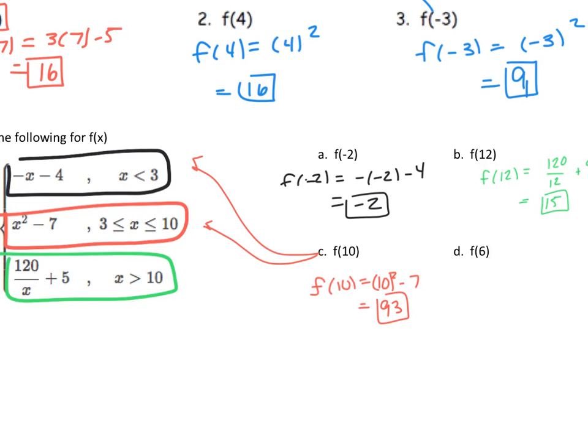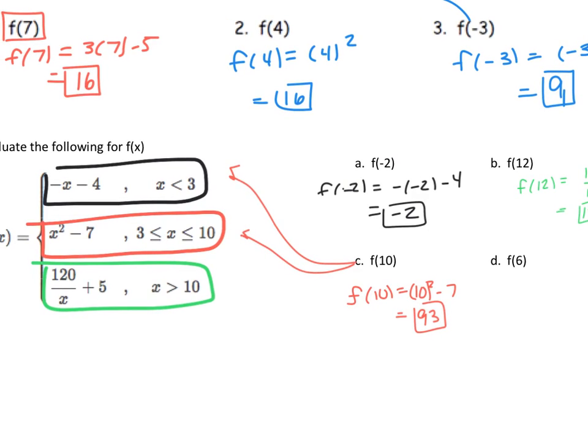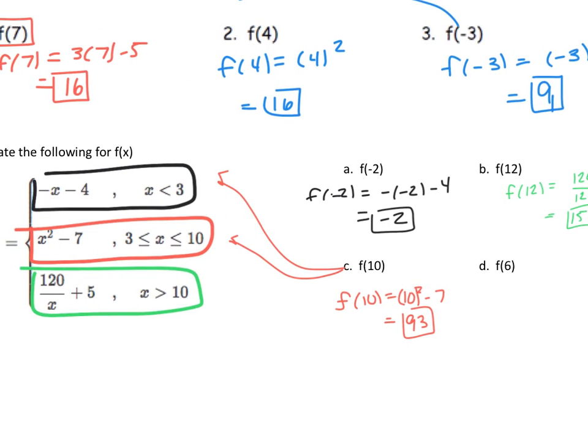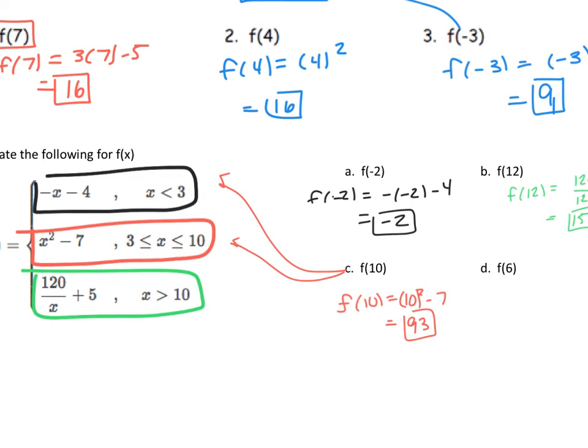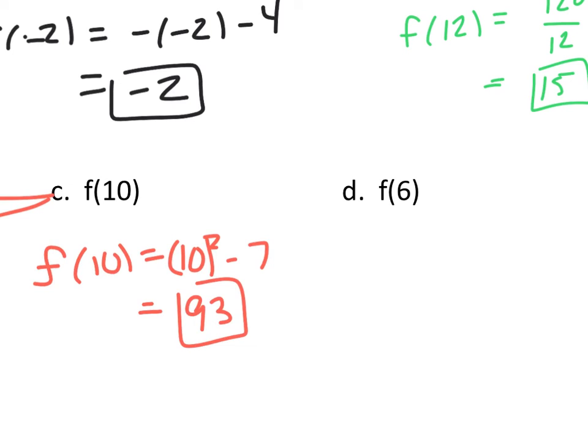Now I'm going to plug in f(6) and I have to ask myself, where does that 6 go? Is it smaller than 3? Nope. Is it in between 3 and 10? Yeah. So it's going right into my red piece again. So I'm going to plug it in as f(6) equals 6 squared minus 7. So I get 36 minus 7, which is 29. And that's your final answer.